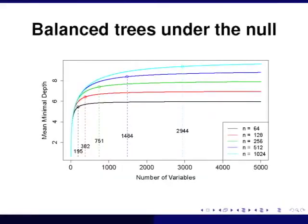On the y-axis is the mean minimal depth under the null, and on the x-axis is the number of variables. The different curves indicate different sample sizes. The first thing you'll see is that the mean minimal depth eventually thresholds independent of sample size if the number of variables is large enough. What it's thresholding at is the limiting depth of a tree, which is log base 2 of n. Under a balanced tree assumption, for a sample size of 256, you get no more than a depth of 8.